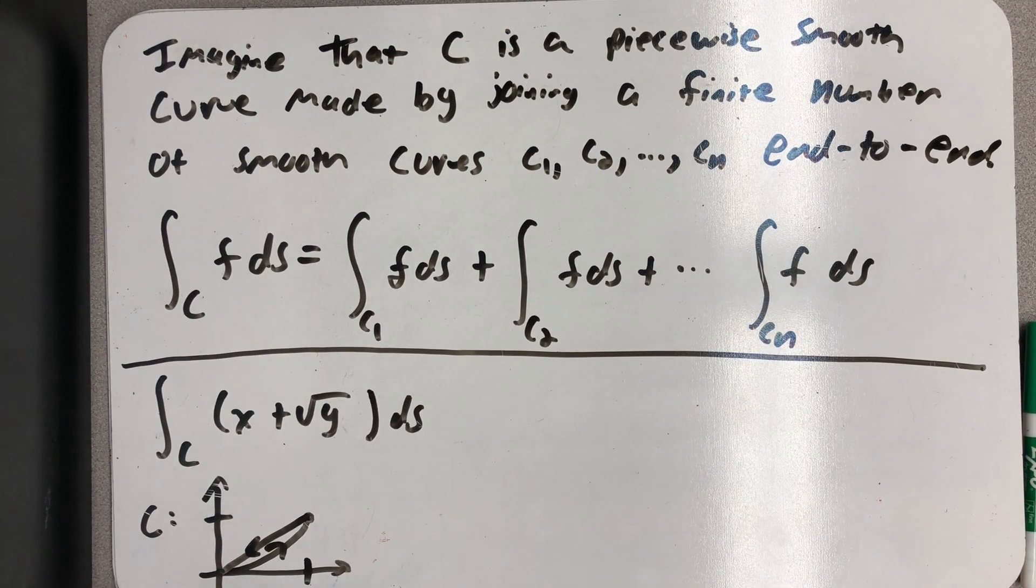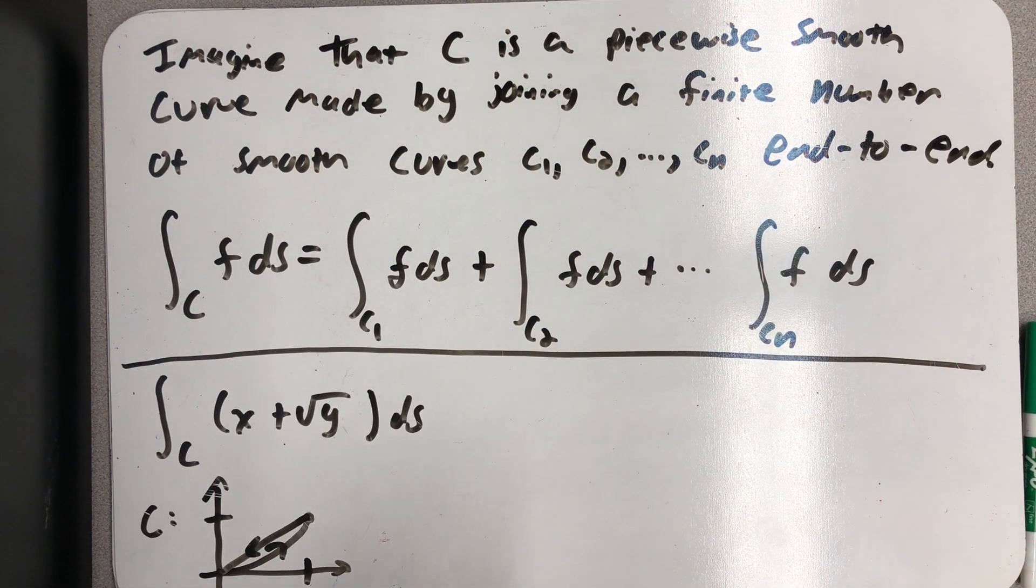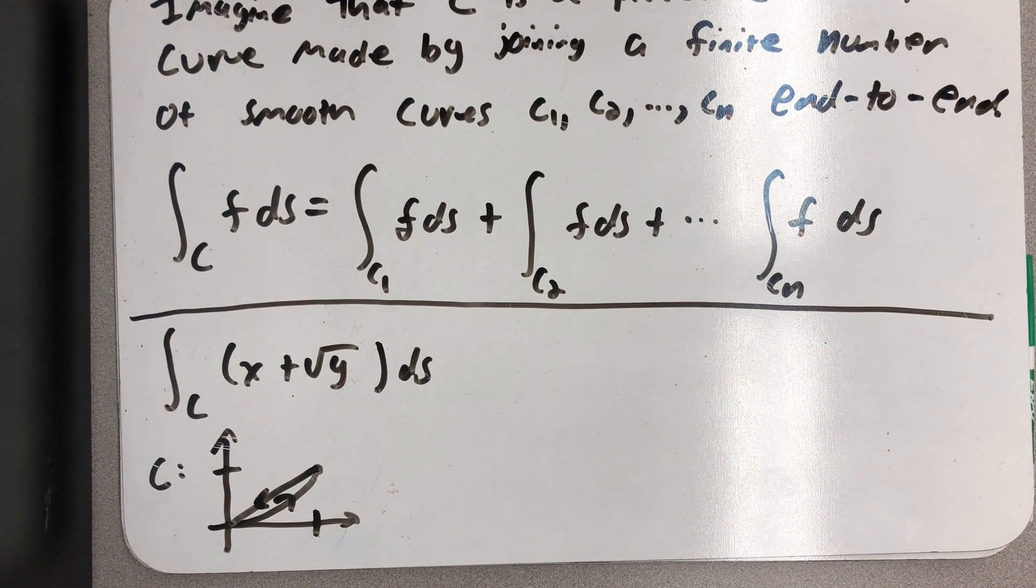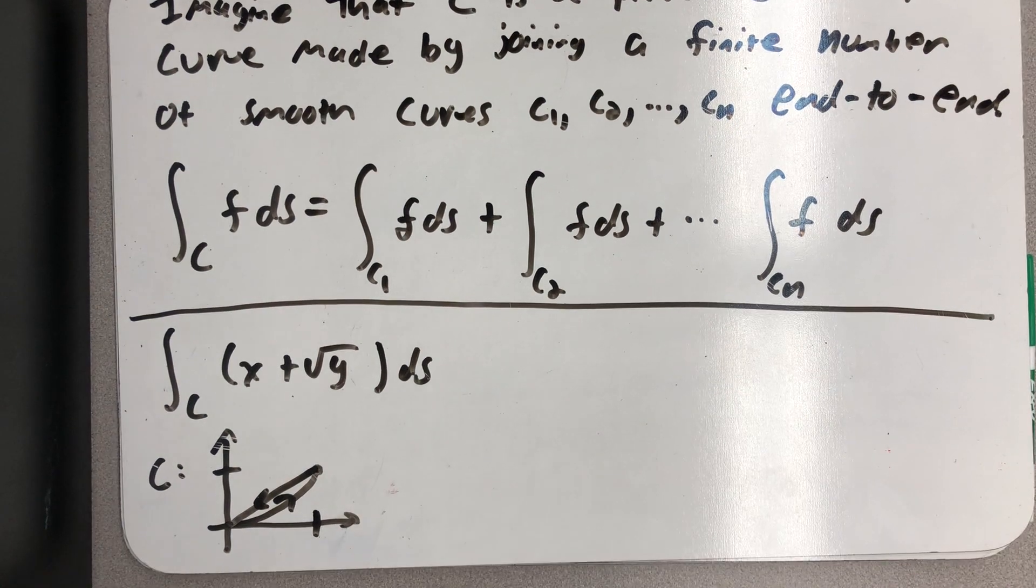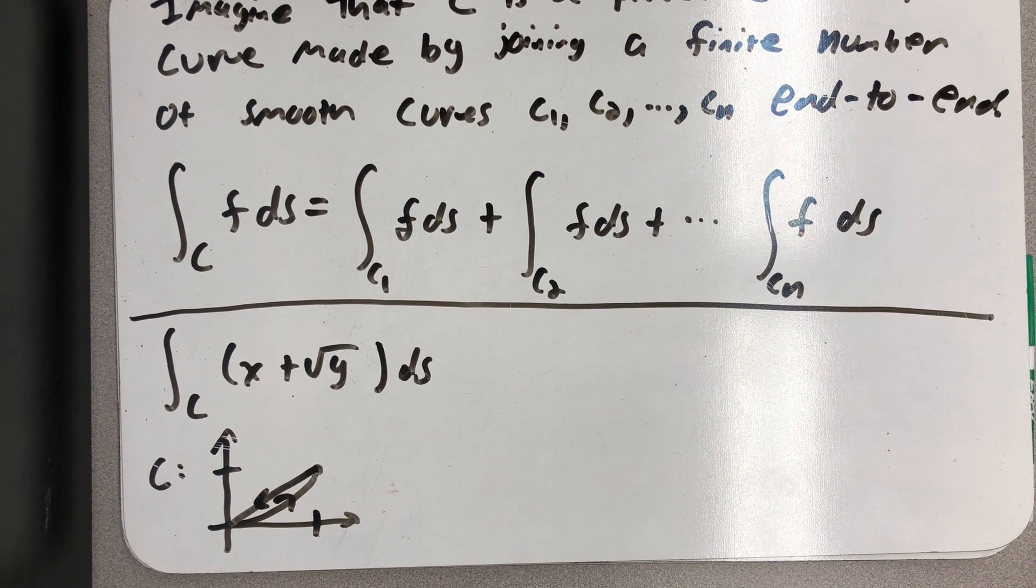Then the integral of F ds over C is equal to the sum of the line integrals over each individual path. So I have a problem here where we're asked to find the path integral of x plus root y ds over C, where C is two different paths here.